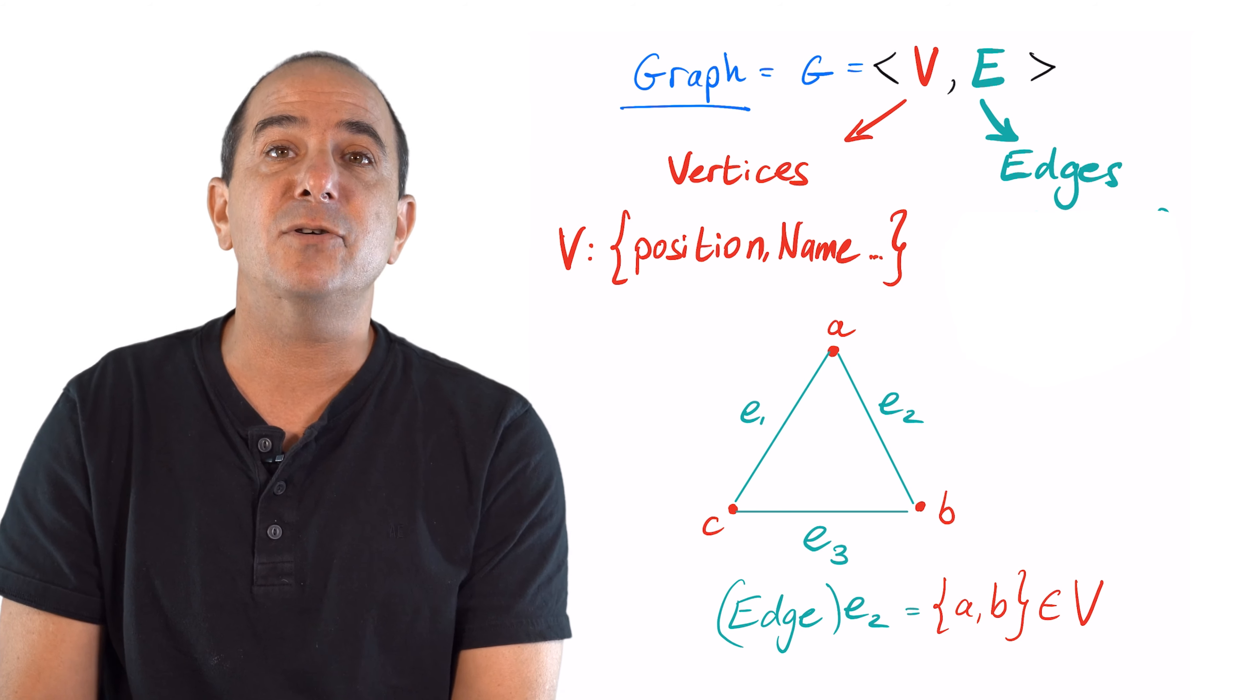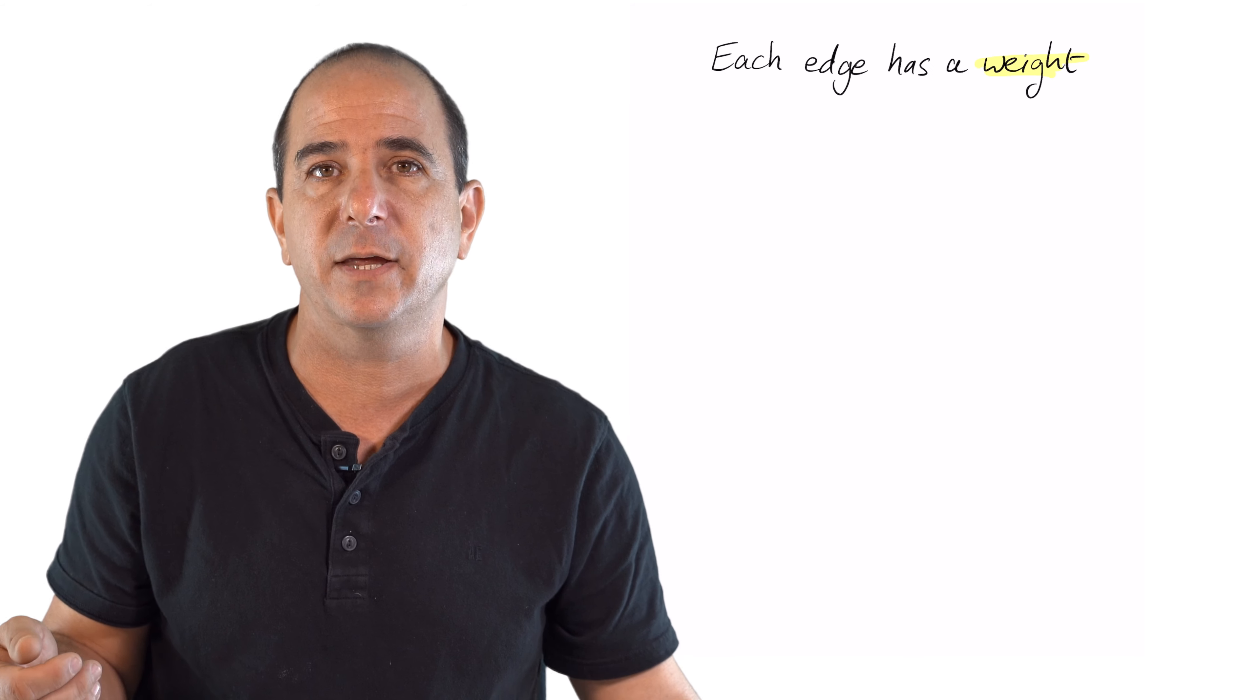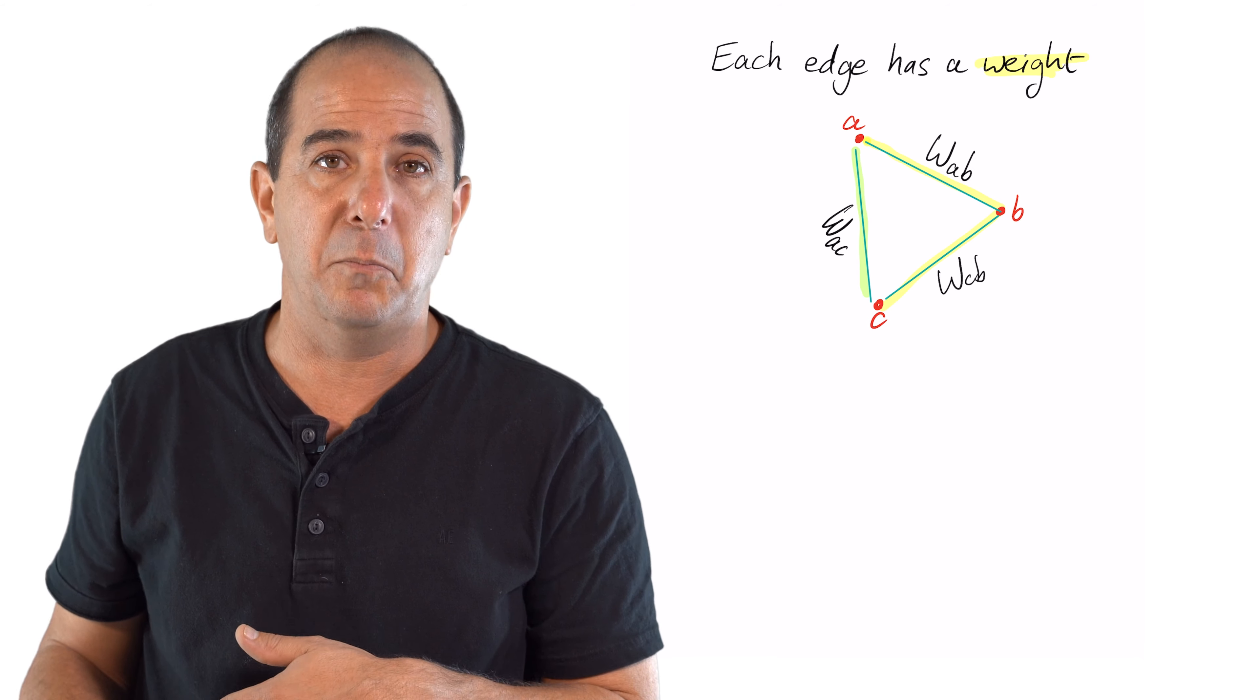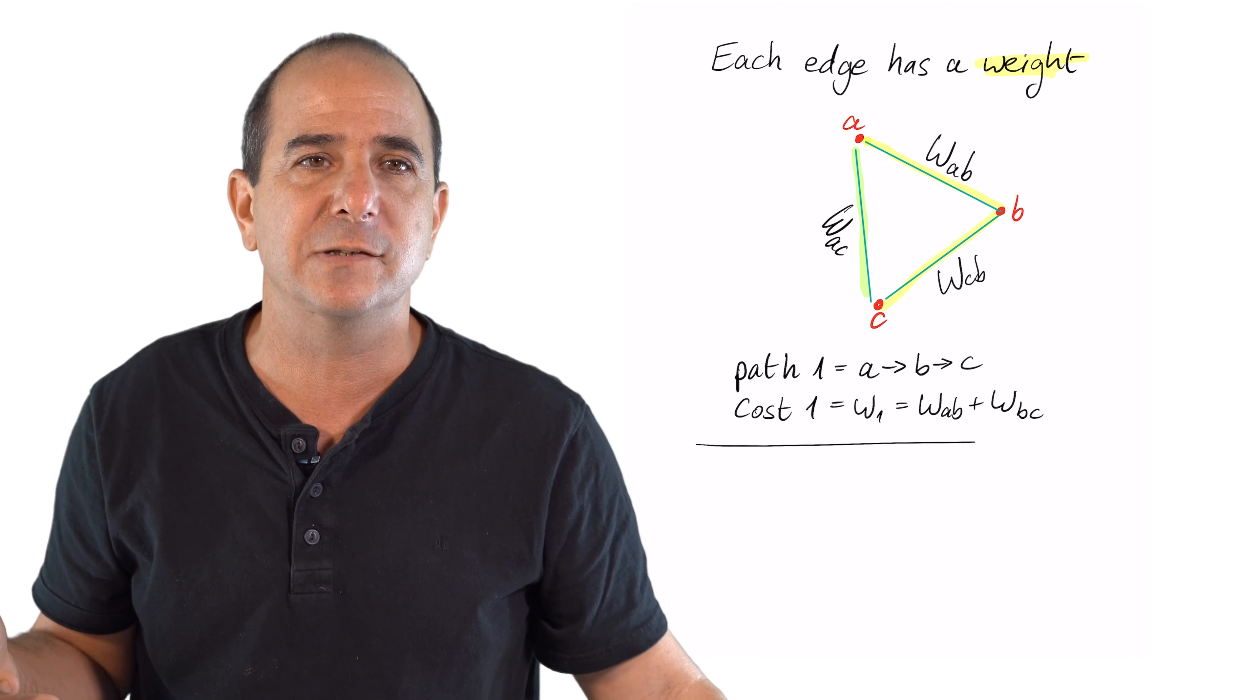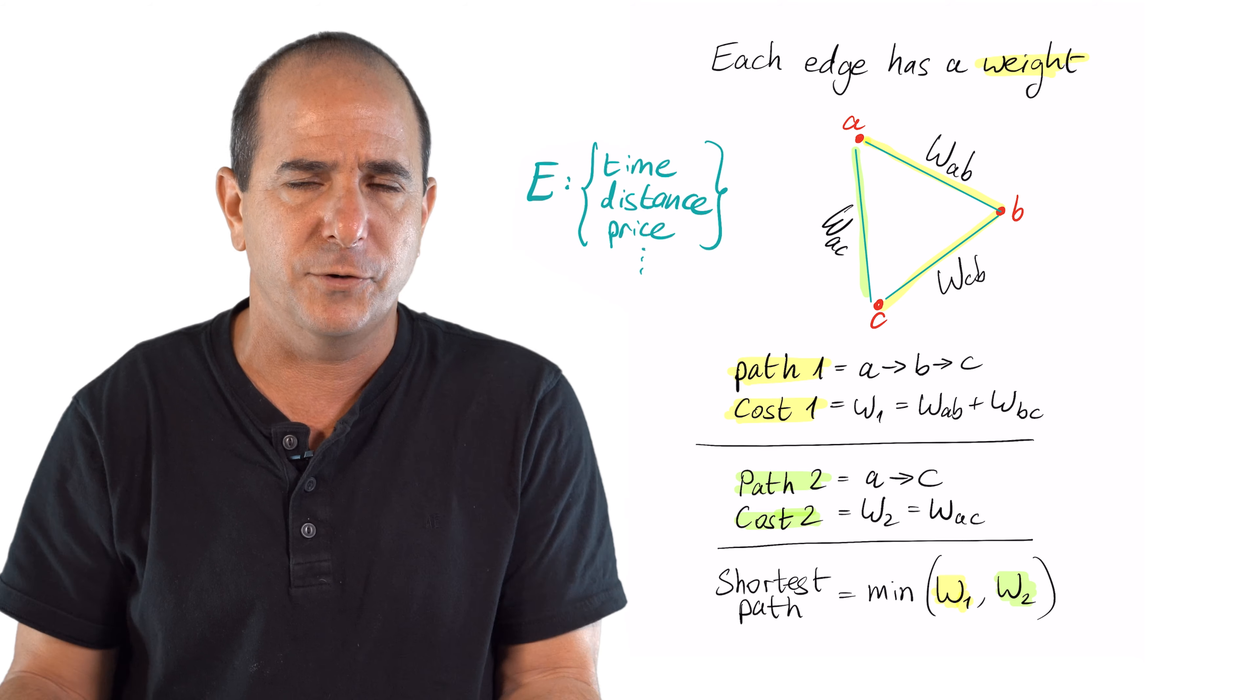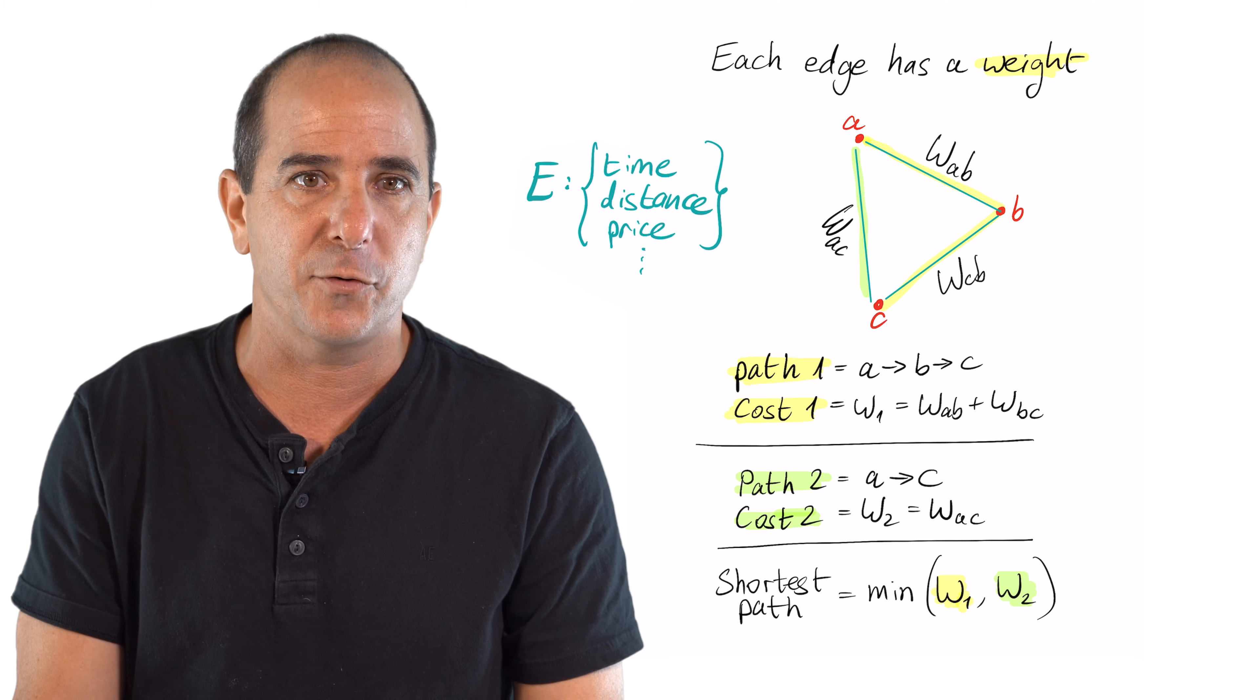And maybe there is a weight associated with this edge. In the case of a road network, you can think of this weight as either time or distance. In general, we think of it as a weight. But this weight could also represent the price, maybe a toll assigned to that road. So maybe the weight would just be the cost for going through that.